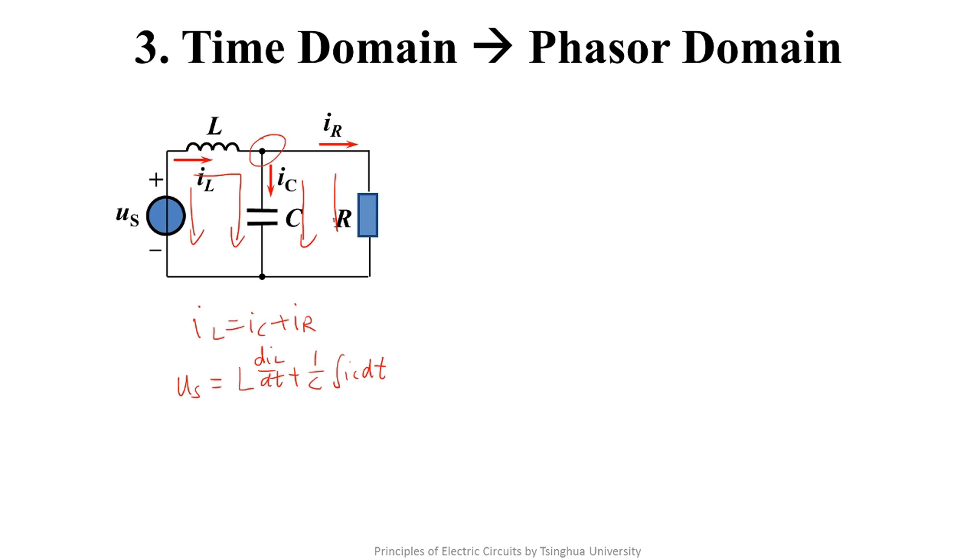In this loop, we know 1 over c times the integral of IC equals R times IR.